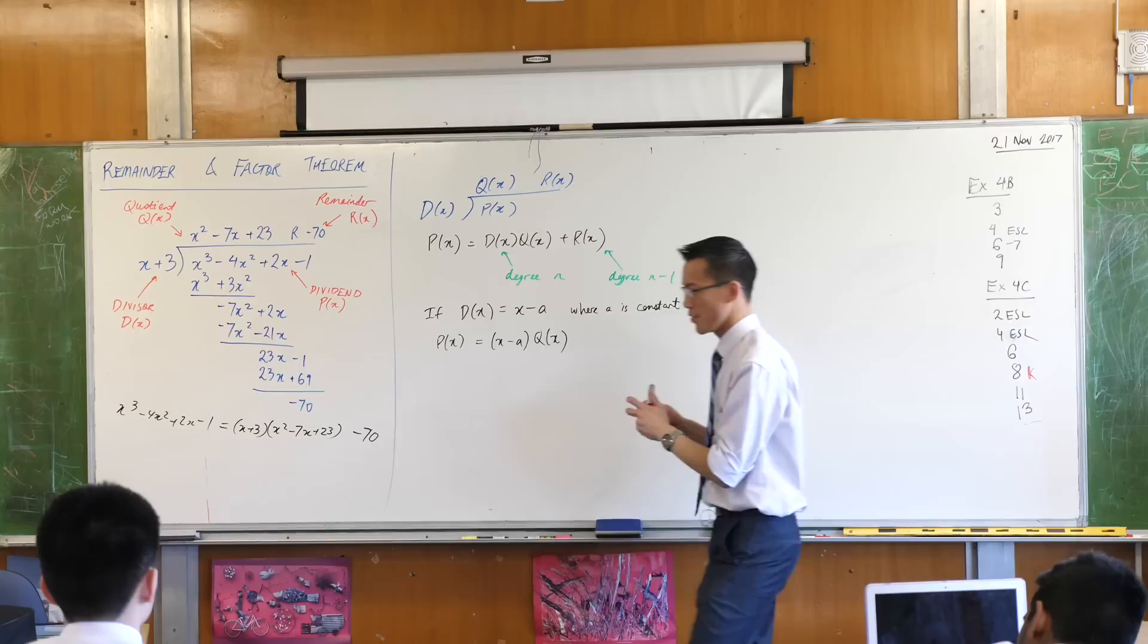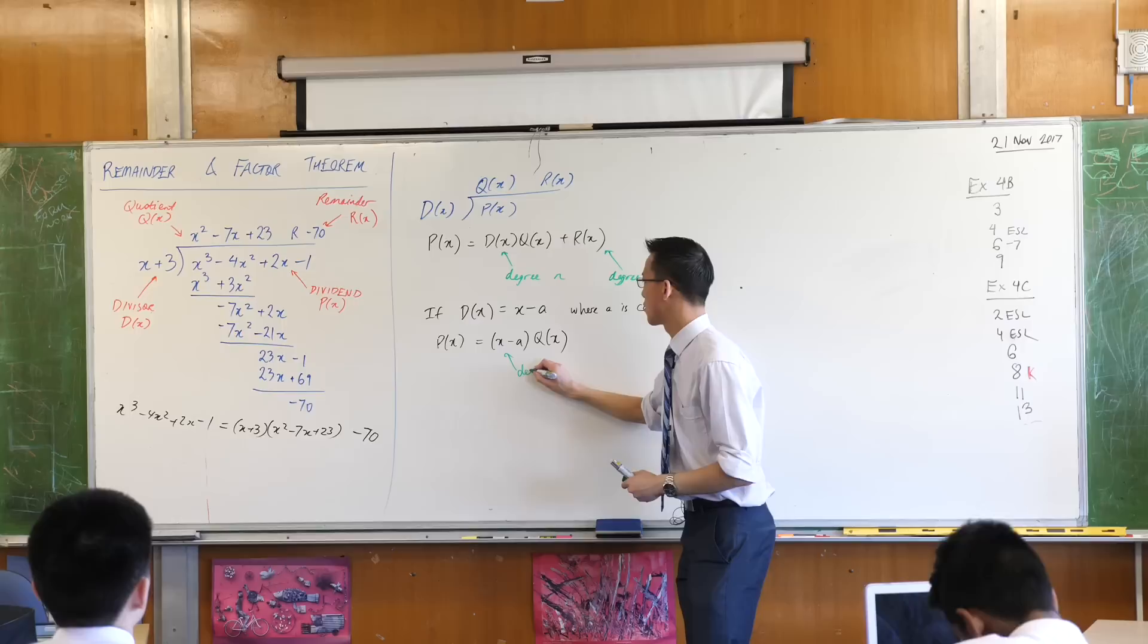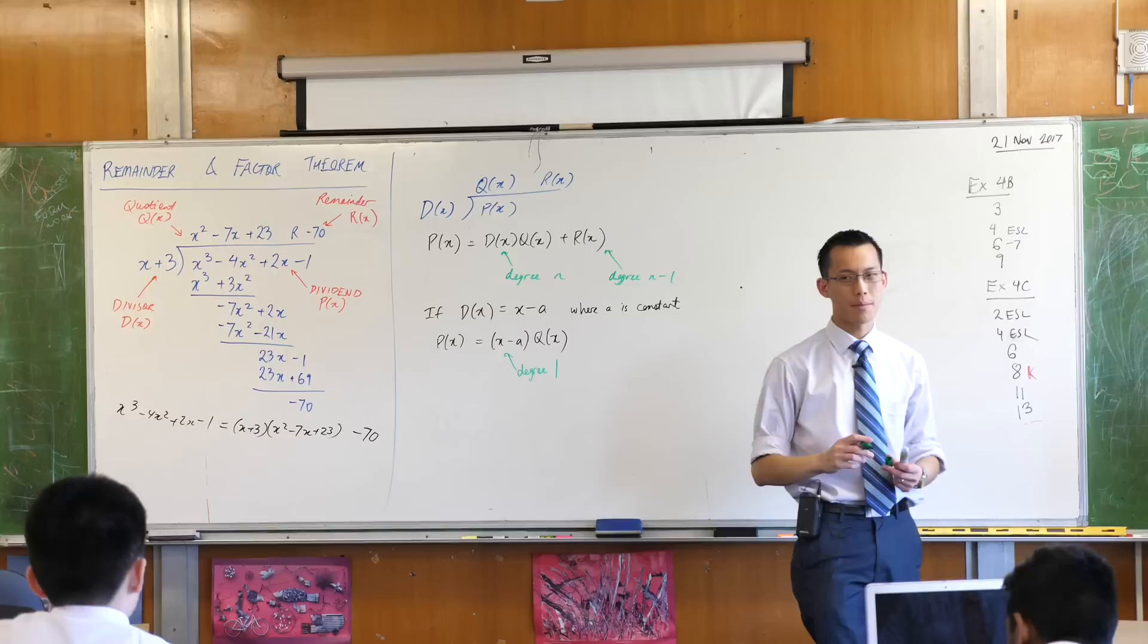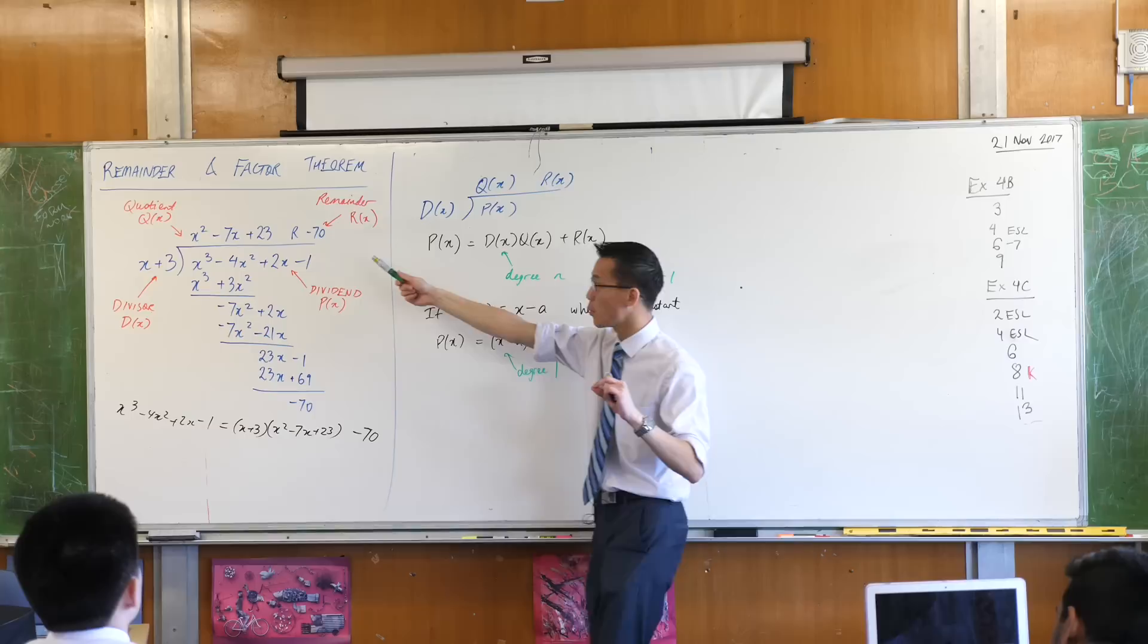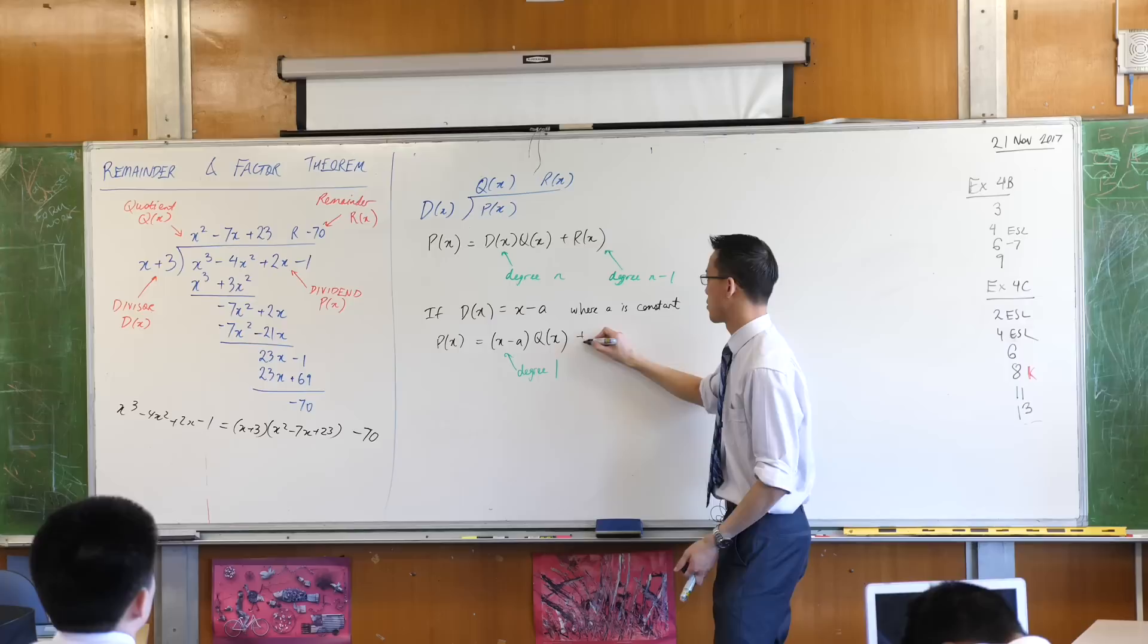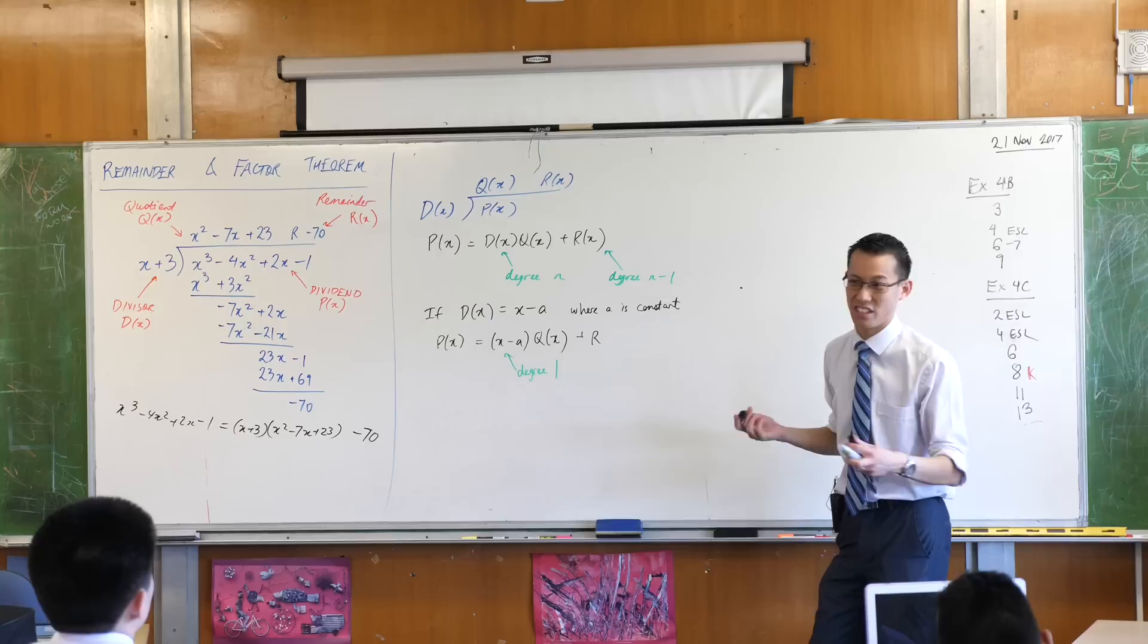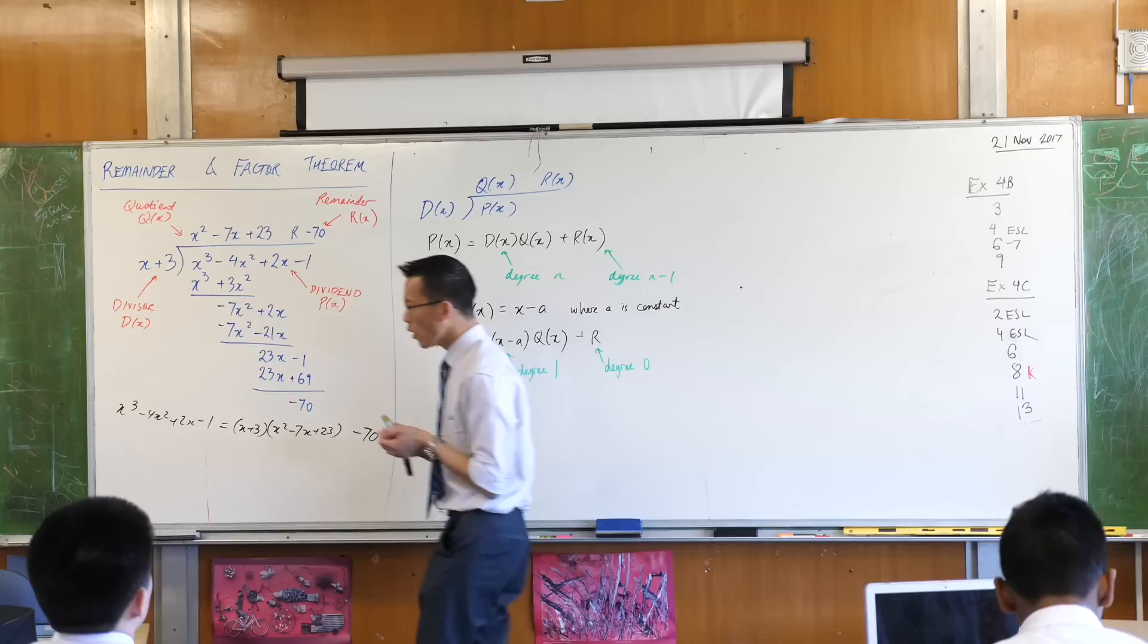I can say that P of X is the divisor, which is x minus a, times the quotient. And because I have a divisor that is degree one, what will be the degree of my remainder? It'll be 1 minus 1, which is zero, which is exactly what we sort of are used to getting. That's a polynomial of degree zero. So since it's just a number, it's degree zero, I'm going to say plus r and I don't need to say any X's here. It's actually independent of x, it's just a constant. So this guy here is degree zero.